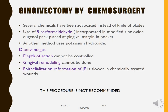Alternative gingivectomy methods include chemosurgery, laser, and electrosurgery. For chemosurgery, some chemicals have been advocated instead of knives: five percent paraformaldehyde in modified zinc oxide eugenol pack placed at the gingival margin and pocket, and potassium hydroxide. The main disadvantage, similar to chemical curettage, is that the depth of action is not controlled, gingival remodeling cannot be done, and re-epithelialization of the junctional epithelium is lower in chemically treated wounds. This procedure is generally not recommended.